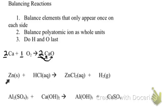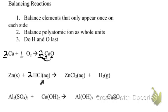Moving on to the next reaction, starting with zinc: one zinc on each side, so zincs are balanced. We skip hydrogen and move to chlorine. We have one chlorine on the reactant side and two chlorines on the product side, so we put a two in front of the chlorine on the reactant side. Now we have two chlorines and also two hydrogens on the reactant side. We also have two hydrogens on the product side, so this is now balanced. The coefficients read 1, 2, 1, 1.